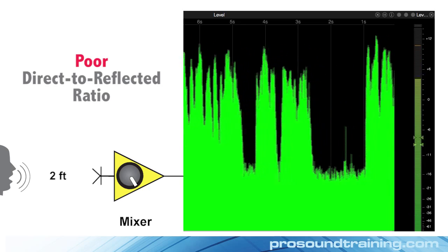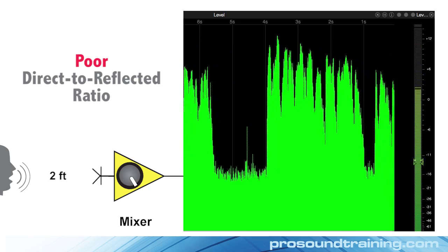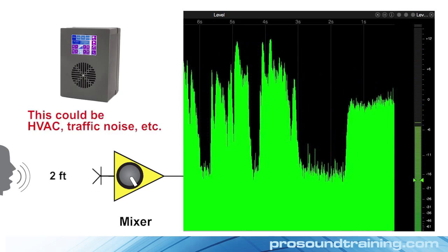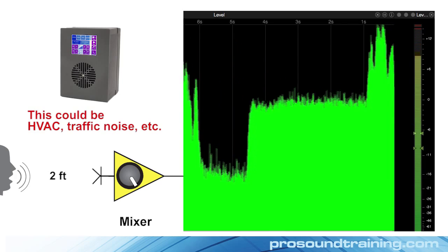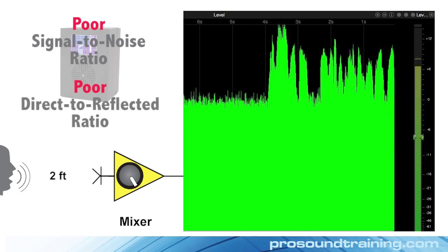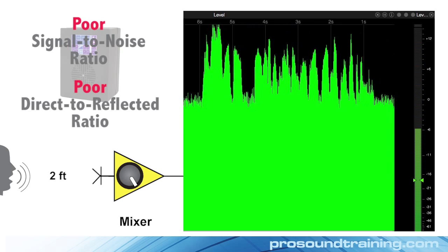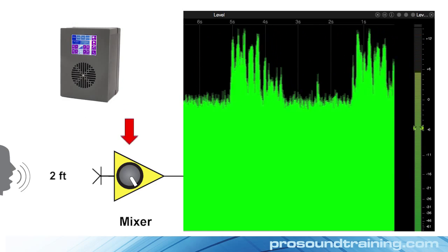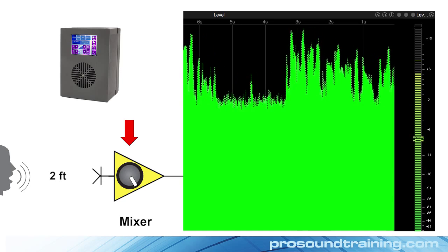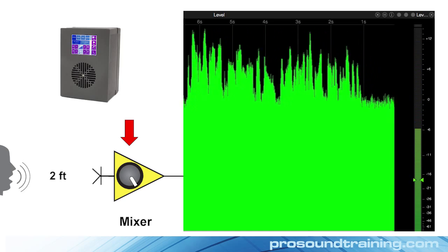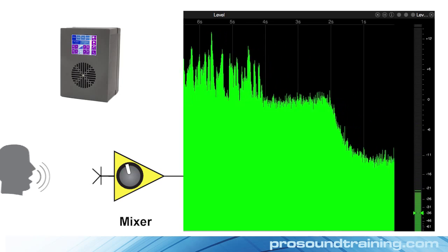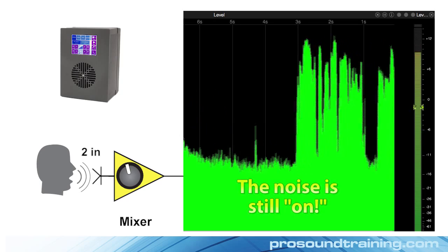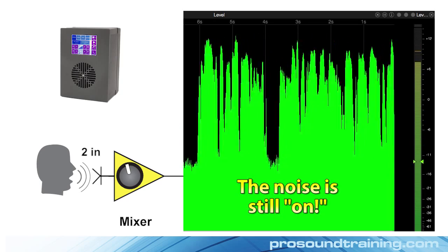To make matters worse, I'll increase the noise floor of my office by turning on a noise source. Now I have both poor signal-to-noise ratio and poor direct-to-reflective ratio. To fix this, the first thing I'll do is turn down the input gain of the mixer so that I can work closer to the microphone. Now I'm speaking directly into the mic, and both the signal-to-noise ratio and the direct-to-reflective ratio are improved.